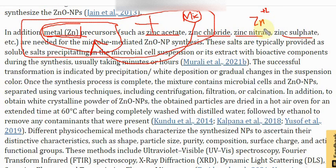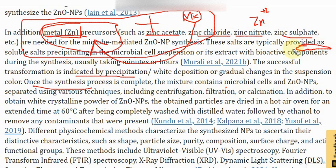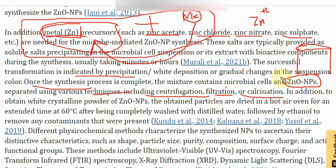There is a physical indication you can use to identify whether nanoparticle formation is occurring: after mixing these two solutions, white precipitate or white deposits form at the bottom of the beaker. Once the synthesis process is complete, the mixture contains both microbial cells and zinc oxide nanoparticles. These are then separated using various techniques such as centrifugation, filtration, or calcination.